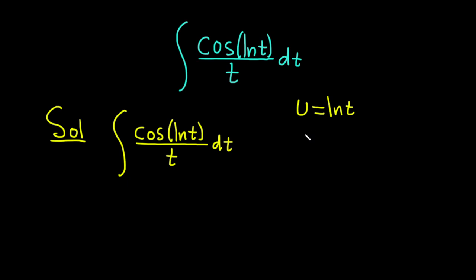And if we differentiate both sides of this equation, we get du is equal to the derivative of ln t is 1 over t, and then here we have the dt. And this works out really nice, because that's exactly what we have in our problem. We have dt over t, which is right here. So all of this is going to become du.